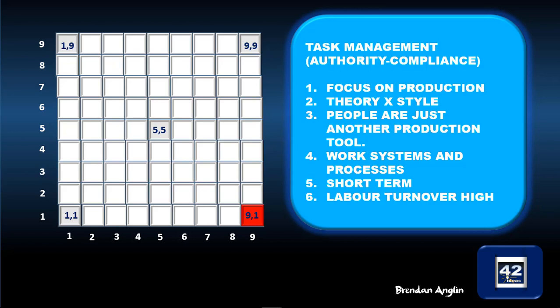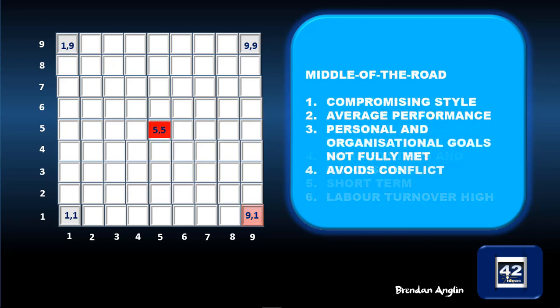People are leaving and entering the company on a regular basis because they're not satisfied with the way they're being treated. The middle of the road style is a compromising style of management. It leads to average performance because neither personal nor organizational goals are completely met, and it partially achieves this by avoiding conflict — neither too focused on production nor too focused on people.